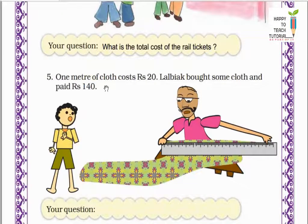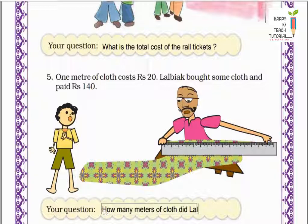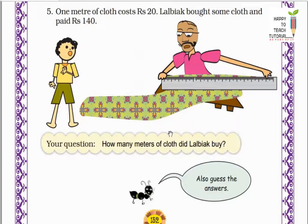Next: one meter of cloth costs Rs. 20. Lalbek bought some cloth and paid Rs. 140. So yahan pe kapde ki keemat 20 rupees hai aur Lalbek ne kuch kapde kharida aur uske Rs. 140 pay kiye. So yahan pe aap question bana sakte hain: how many meters of cloth did Lalbek buy? To find the answer we do 140 divided by 20, which gives us 7. That means Lalbek bought 7 meters of cloth.